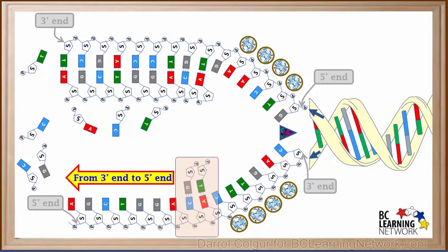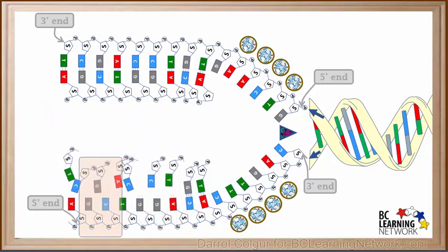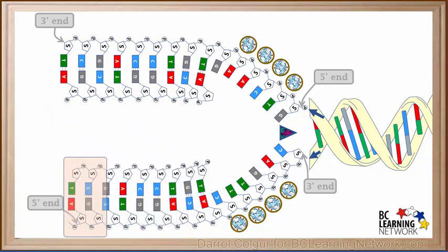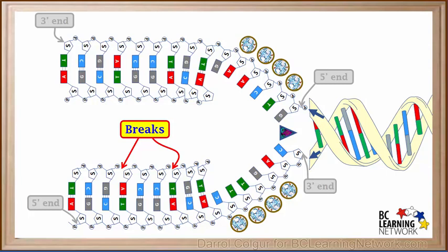After adding more nucleotides with complementary bases to this original bottom strand from its 3' end toward its 5' end, we end up with this new section. Due to reasons a more detailed description of this process will reveal in more advanced biology courses, breaks occur between some of the nucleotides in the new strand that forms here.